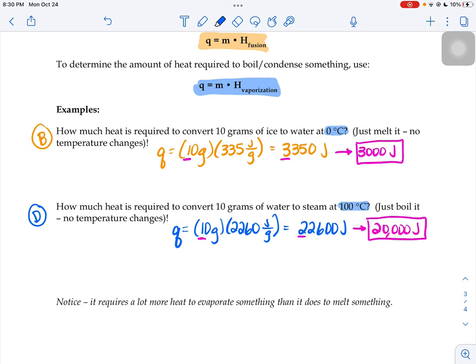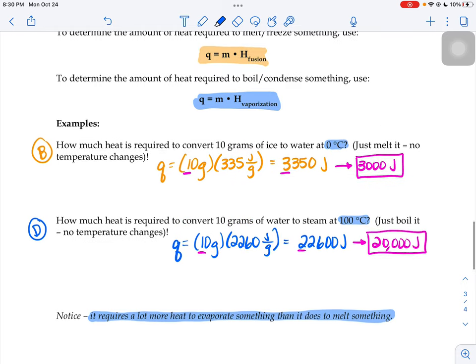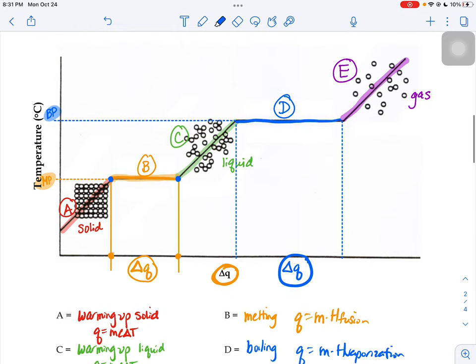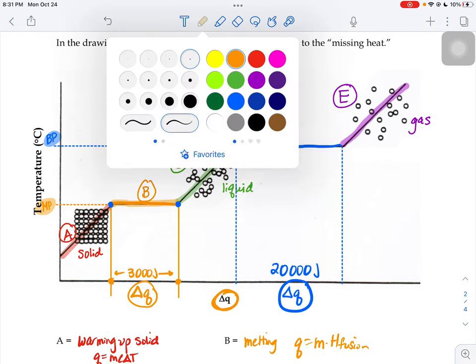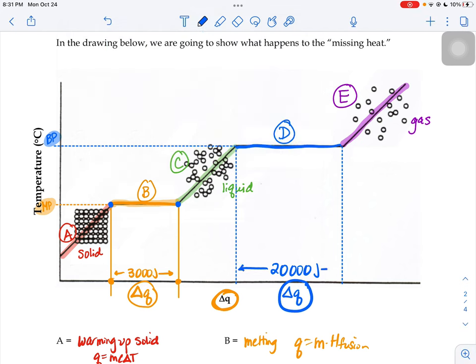And it does point out to you here, notice it takes a lot more heat to evaporate, boil something than it does to get something to melt. 20,000 joules versus 3,000 joules. And that's why that D line is wider. It would be as if we labeled this little section here. From here to here are 20,000 joules. Whereas our orange section over here, section B only takes 3,000 joules to go from here to here. 20,000 joules to go from here to here. So that section is wider on the graph.